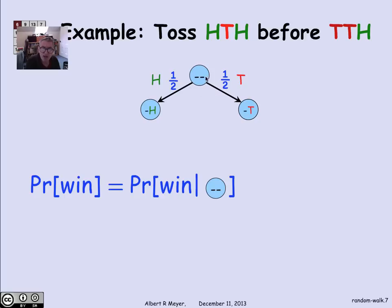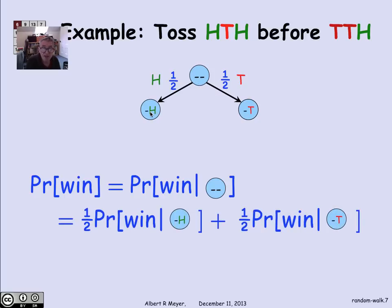But the probability that I win starting here is simply the probability that I win starting at the state nothing H, or the probability that I win at the state starting nothing T, with the two probabilities weighted equally, since this is a fair coin. That is, the probability of winning given no prior tosses is half the probability of winning if the first toss is an H, plus half the probability of winning if the first toss is a T. This is just an application of the law of total probability.